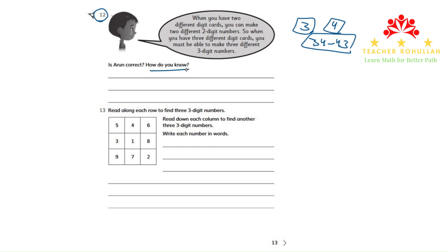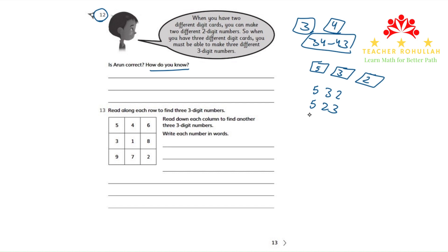Yes, Arun is correct. We can even make more than three different three-digit numbers. For example, if you have three digit cards — let's choose five, three, and two — the first number we can make is 532, the second is 523, then 352, and 253.